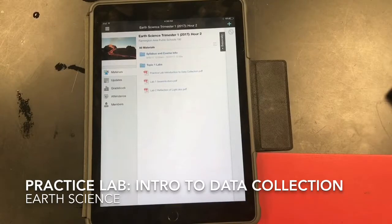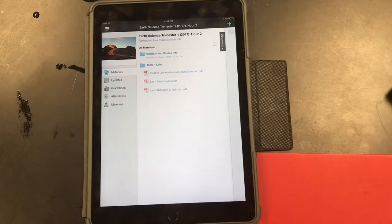Well hi there everybody. This is Mr. Wells. Today we're going to be doing our very first lab in earth science, which is our practice lab, Introduction to Data Collection. So today we're not going to be doing a whole lot of actual earth science. Really what we're going to be doing is getting used to some of the devices and equipment that we use in this class for our future labs. This should be a pretty simple lab where we're just getting used to the basics of what it takes to do an earth science lab.